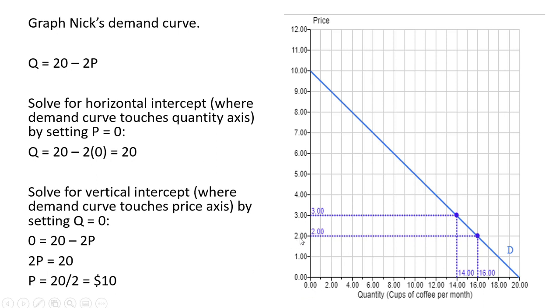Next I plug $2 back into the demand equation. As we saw, Nick will buy 16 cups at $2, and at $3 per cup Nick will buy 14 cups.